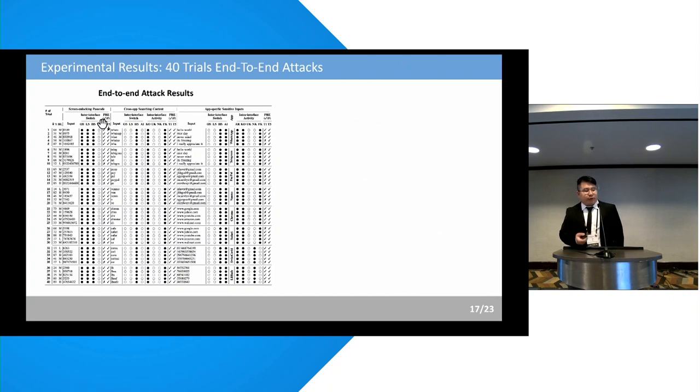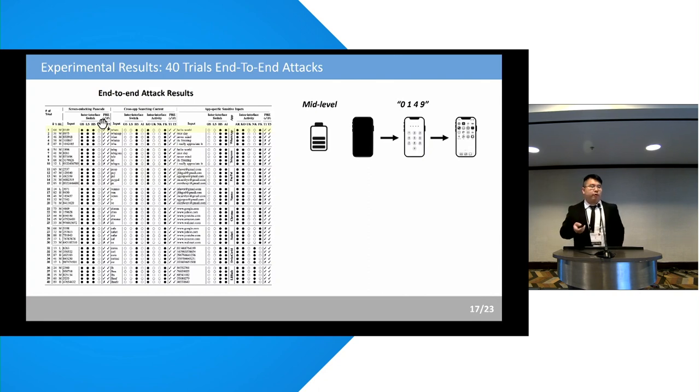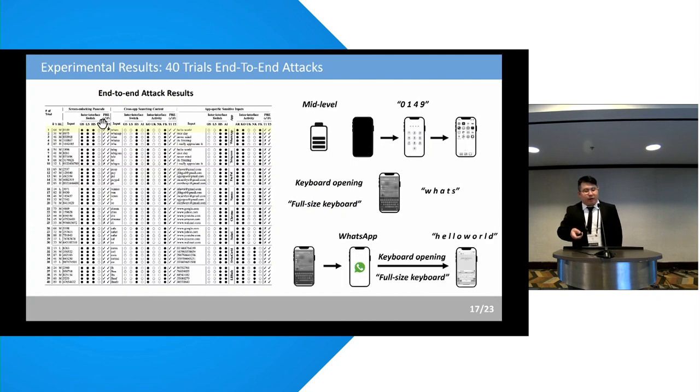In addition, we have also conducted 40 trials of end-to-end attacks, involving a series of victim activities. For example, in the first attack trial, it first detects the battery, the charging battery level is at mid-level, and then it detects the interface switch across the off-screen to lock-screen to home-screen and the passcode input as 0149. And then, when it detects it is into the home-screen, it detects the keyboard opening with a full-size keyboard, and the input is WHADS, which means the user is searching for WhatsApp. Then, it detects the launching of WhatsApp, as well as the keyboard opening with a full-size keyboard, and the input is hello world.